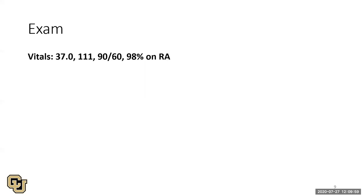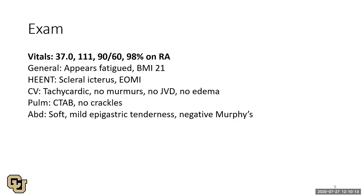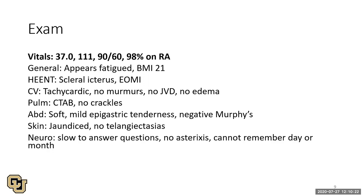For her vital signs, she's afebrile, tachycardic, with a low blood pressure — though in young women pressures in the 90s over 60s are not uncommon — and saturating 98% on room air. On exam she appears fatigued, has scleral icterus, is tachycardic with no signs of volume overload, lungs are clear, mild epigastric tenderness but negative Murphy's sign. She's jaundiced but no telangiectasias. She's slow to answer questions, no asterixis, but cannot remember the day or month — so oriented limitedly.